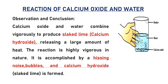Activity: reaction of calcium oxide and water. When we add calcium oxide to water, the observation is that calcium oxide and water combine vigorously to produce slaked lime — calcium hydroxide. It releases a large amount of heat; this reaction is highly vigorous in nature, accompanied by a hissing noise and bubble formation, and calcium hydroxide is formed.